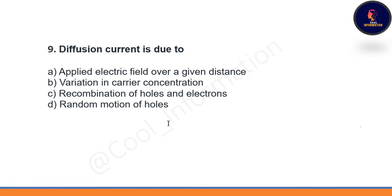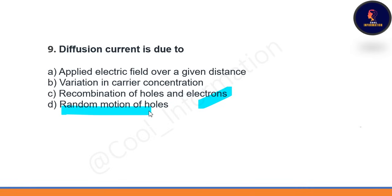Question 9: diffusion current is due to — option A: applied electric field over a given distance. Option B: variation in carrier concentration. Option C: recombination of holes and electrons. Option D: random motion of holes. Correct option is B — diffusion current is due to variation in carrier concentration.